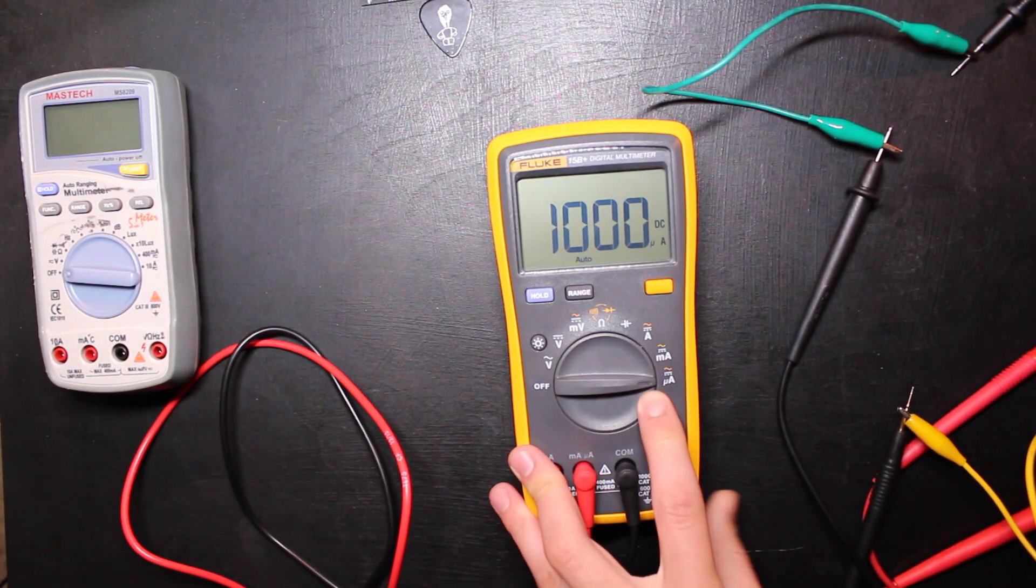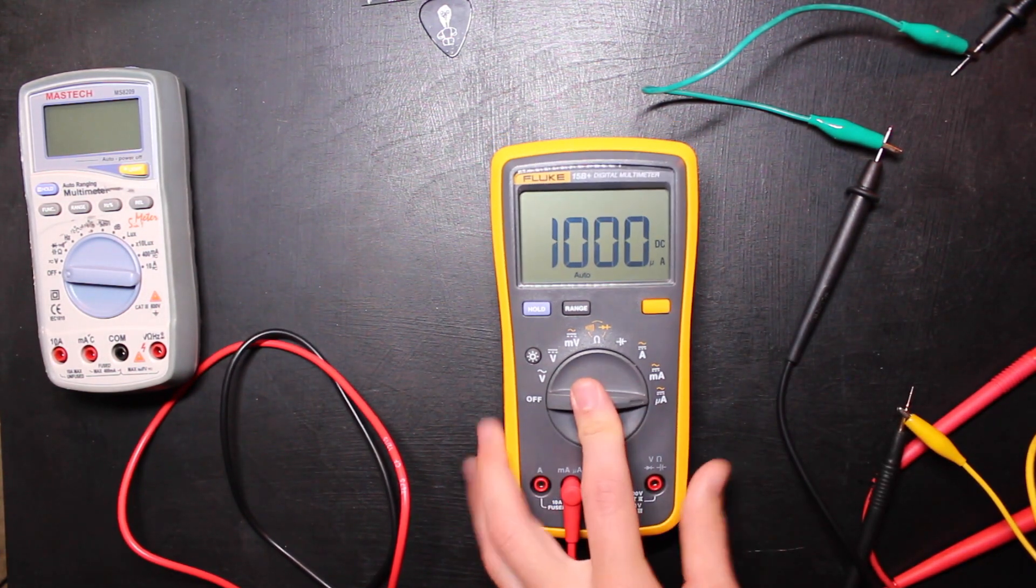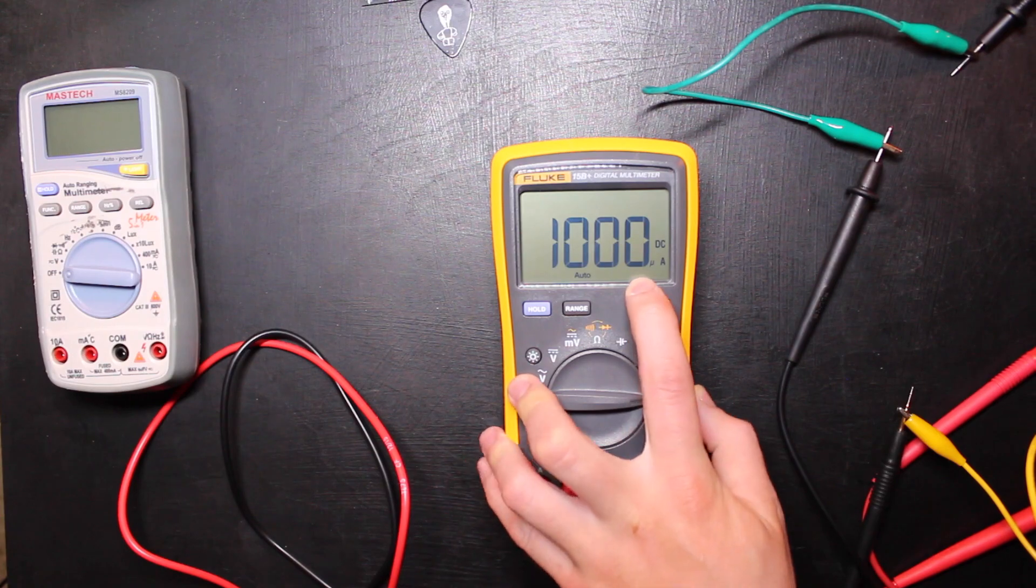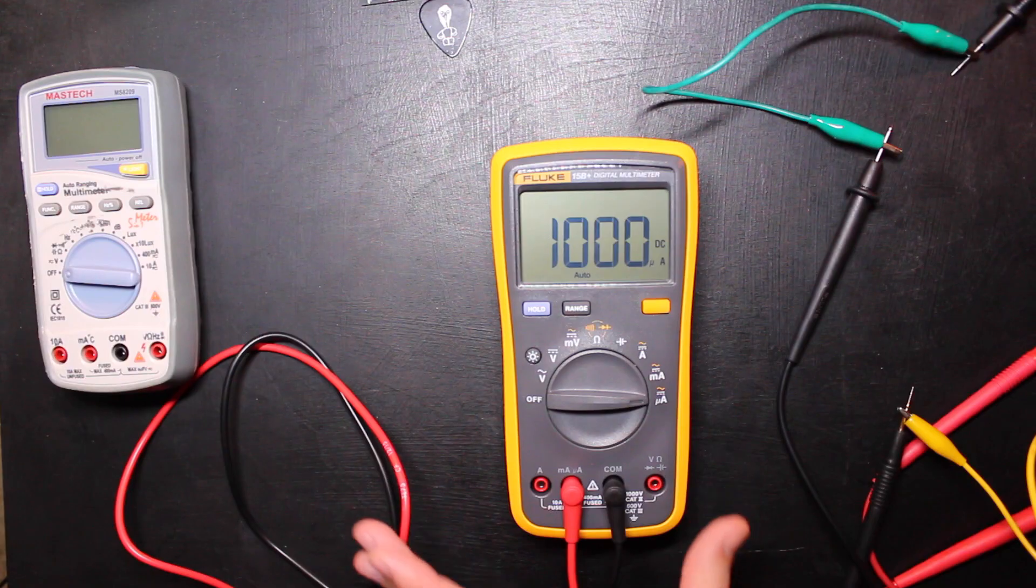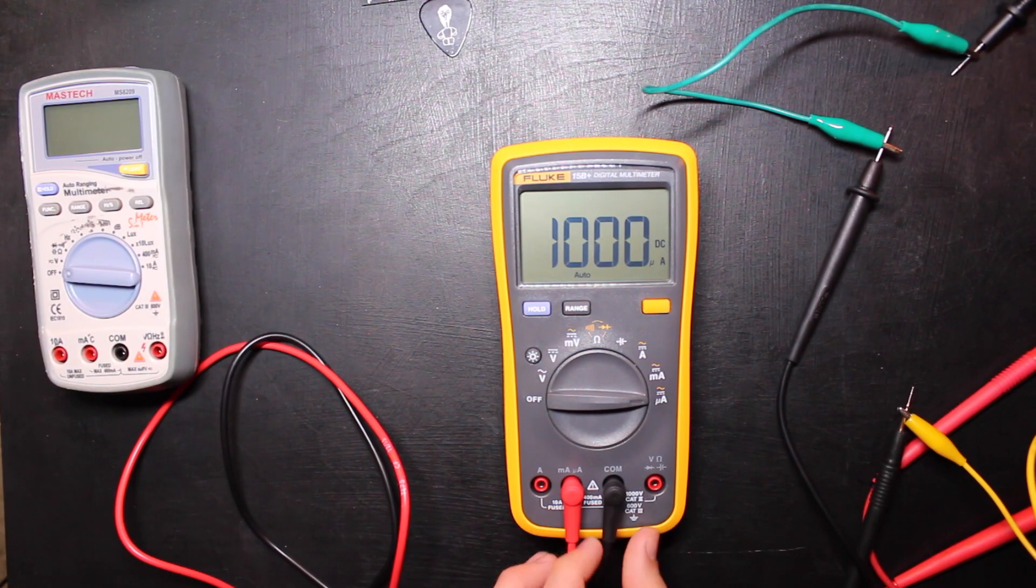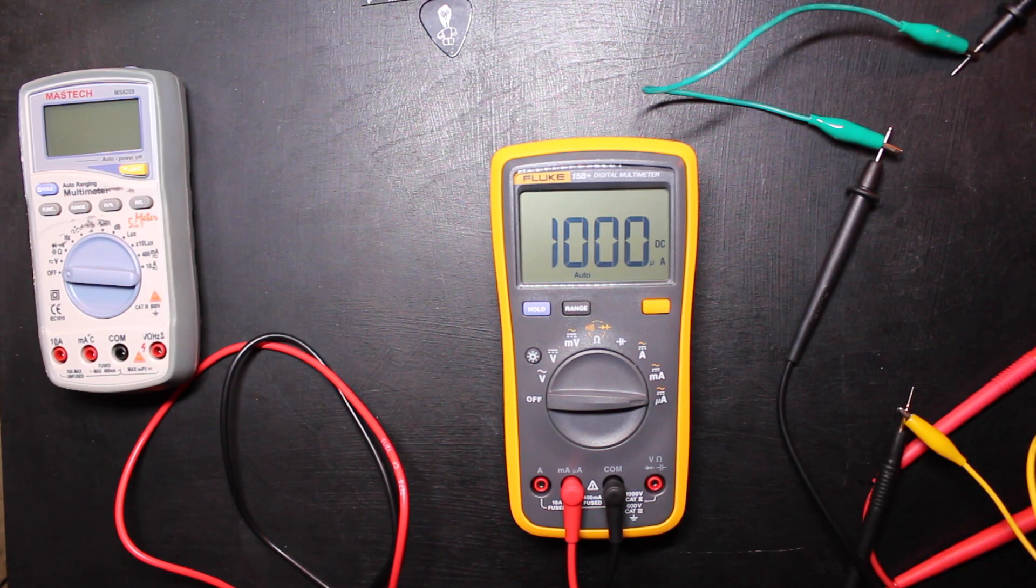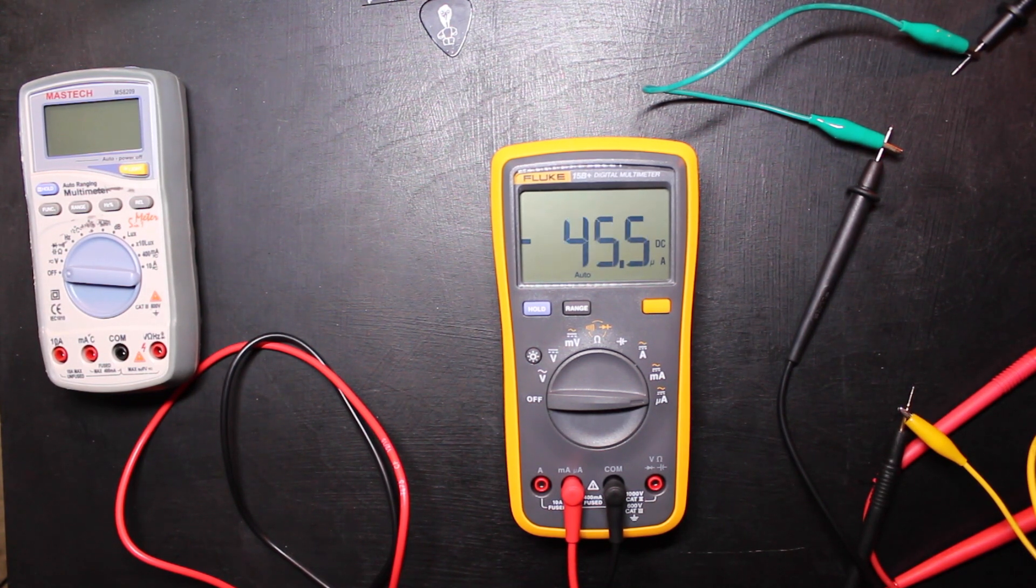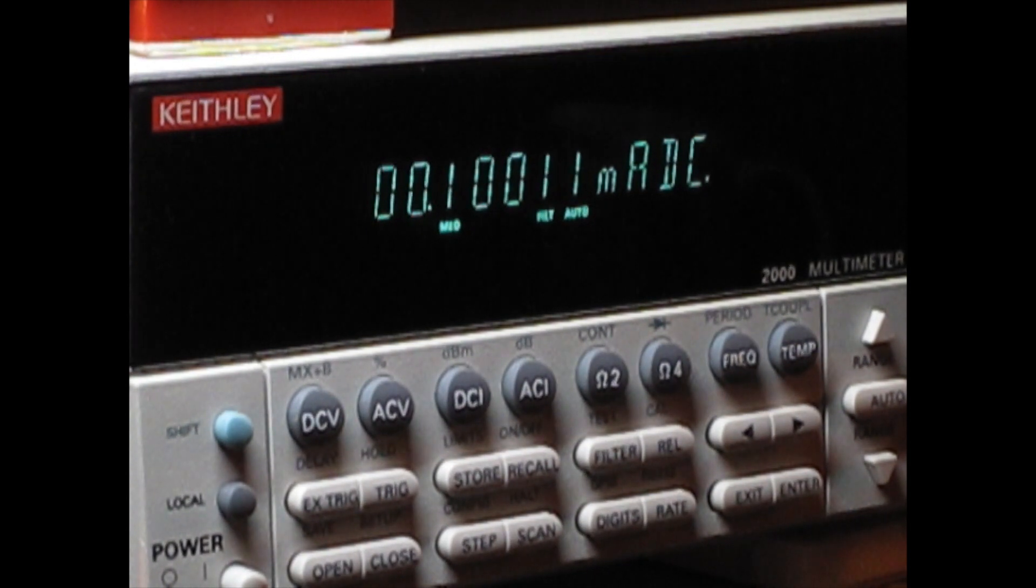Let's keep dropping it. Okay, actually I kicked it over to the microamp scale and now we're reading 1000 microamps, so that's perfect, one milliamp. Now let's keep dropping it from there. Okay, we're really getting in the mud here now.